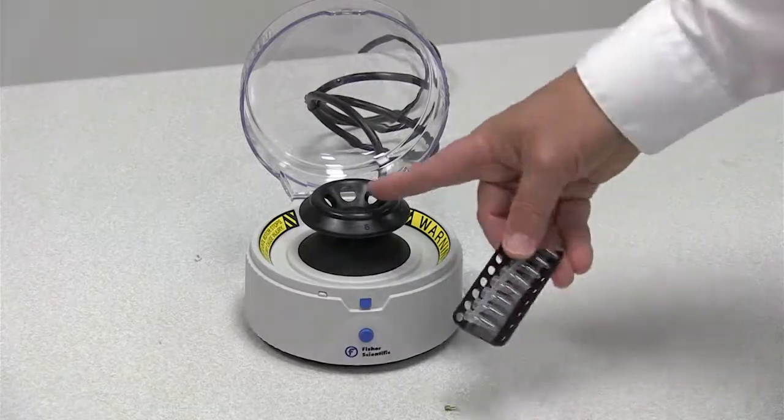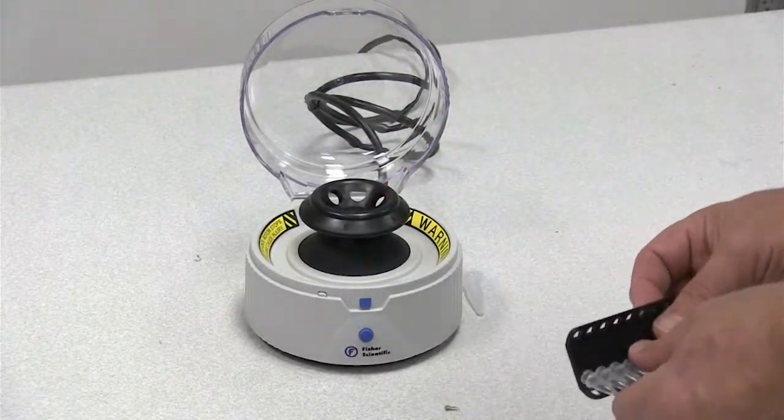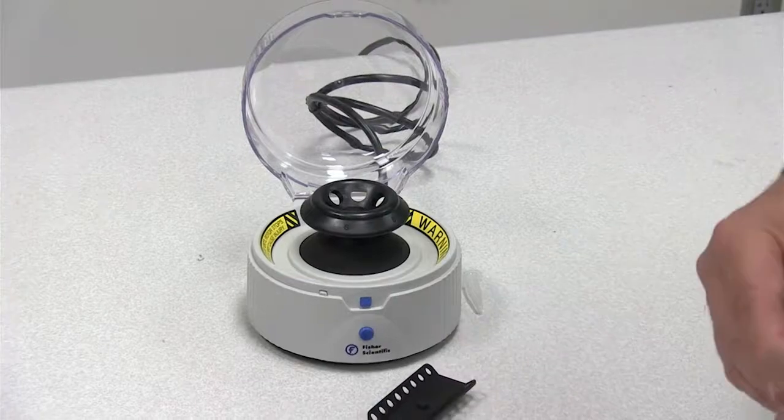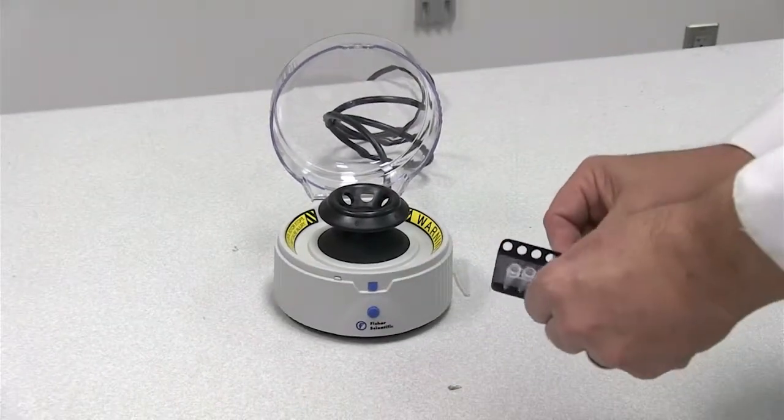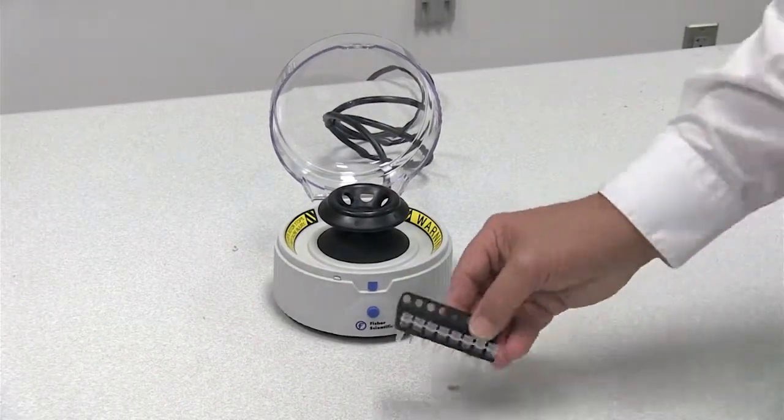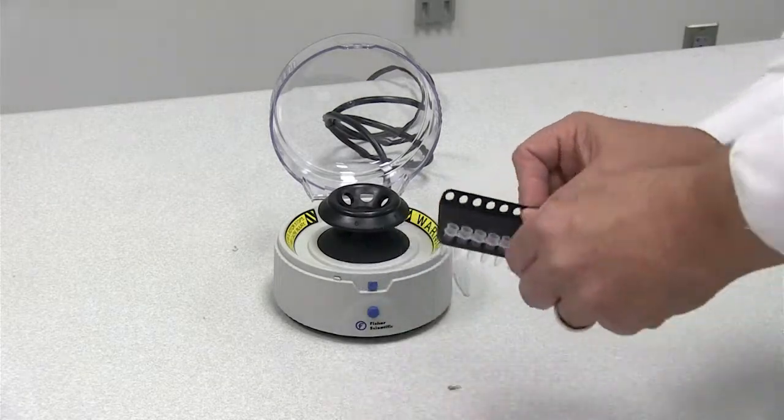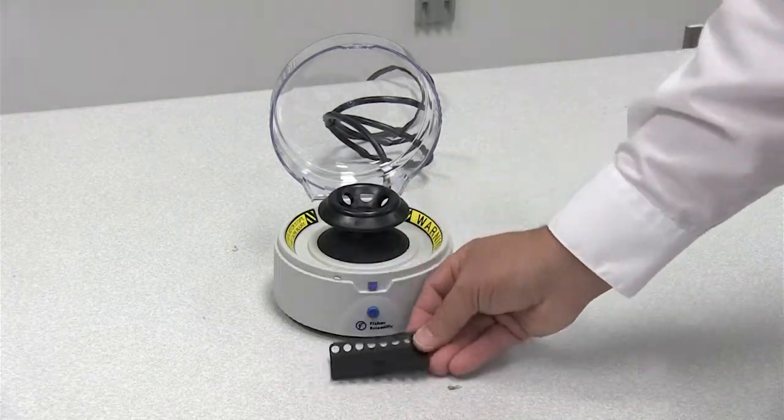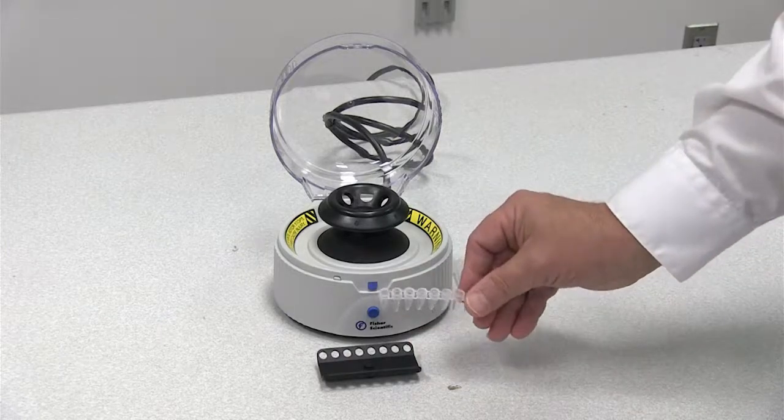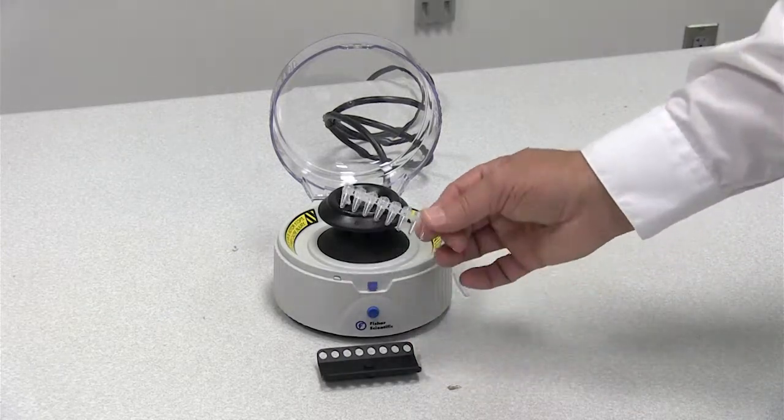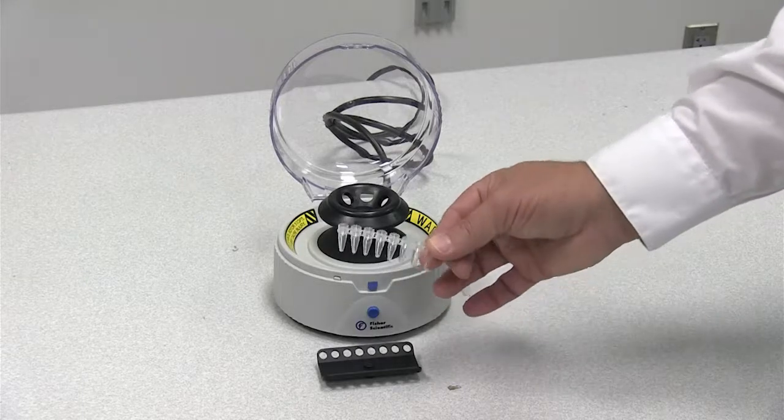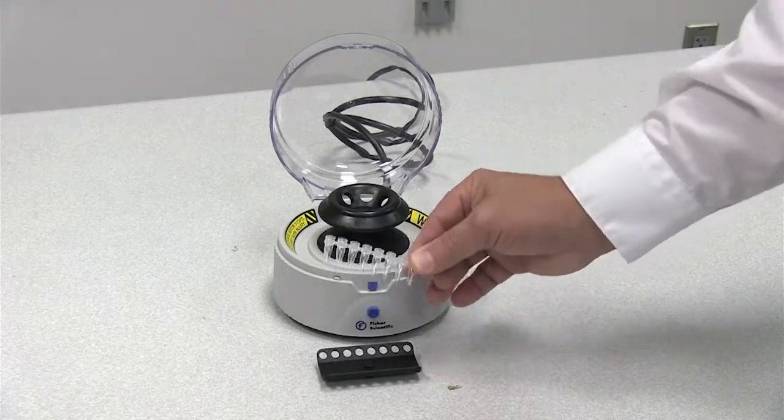This rotor here is interchangeable with this strip tube rotor that you can actually spin strips of PCR tubes in there. So this is kind of a specialty adapter for labs that do a fair number of procedures with these small PCR type tubes.